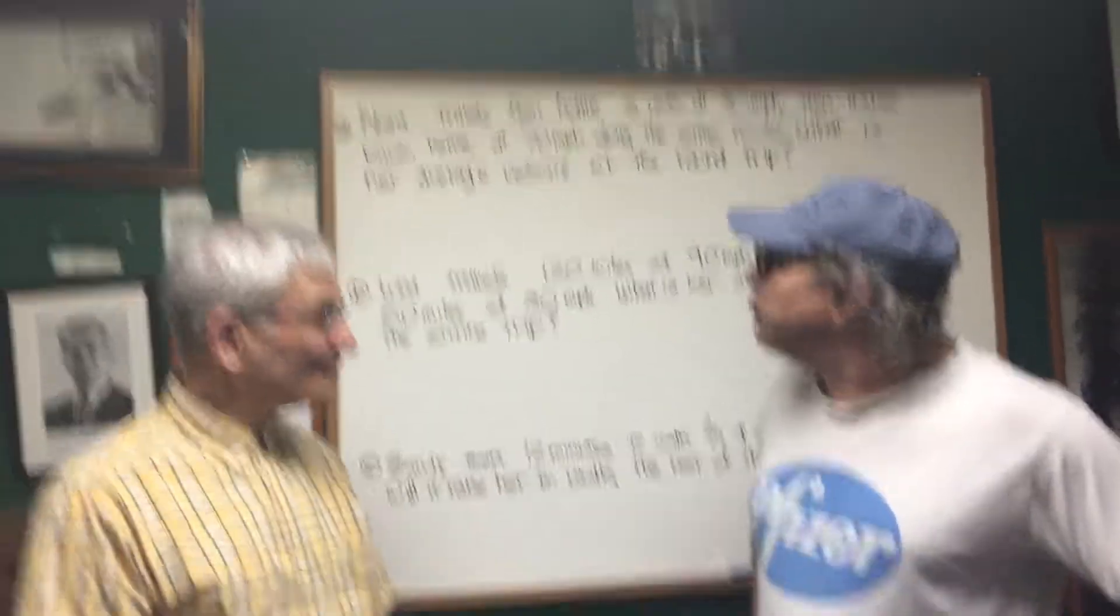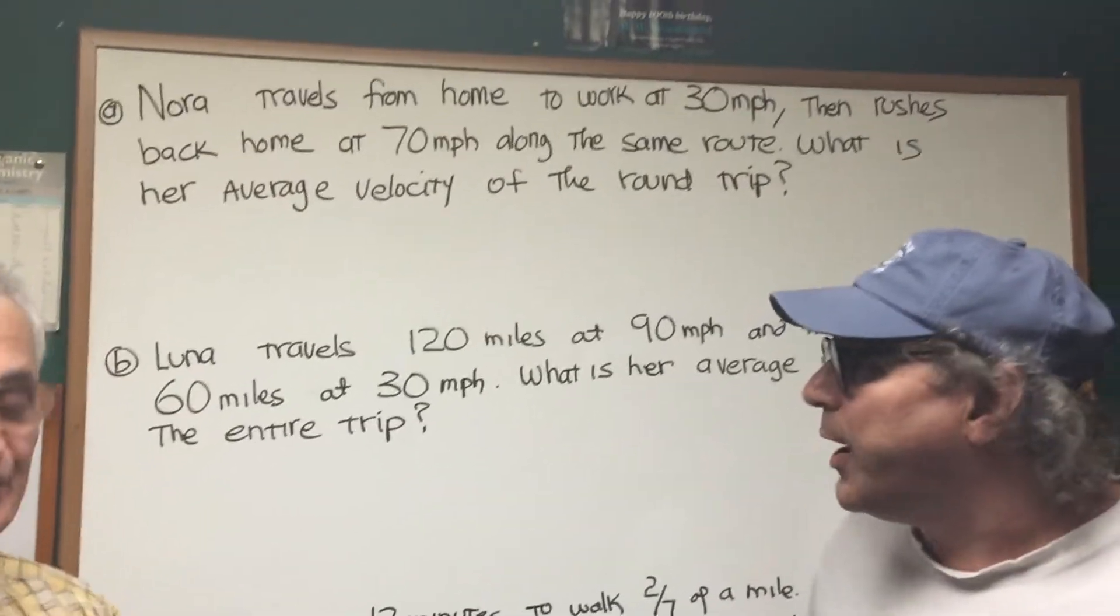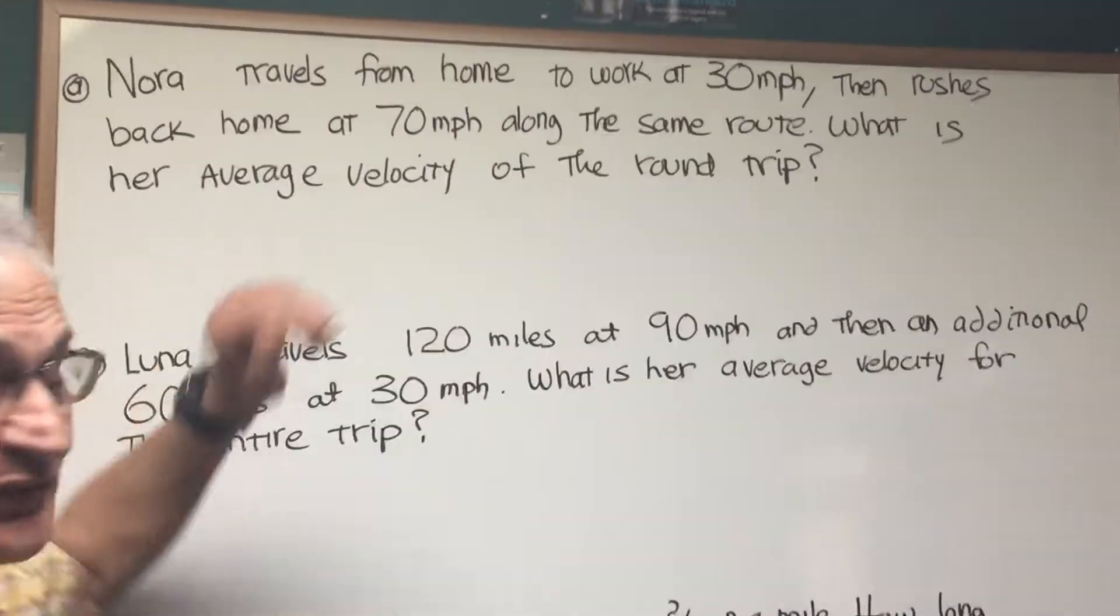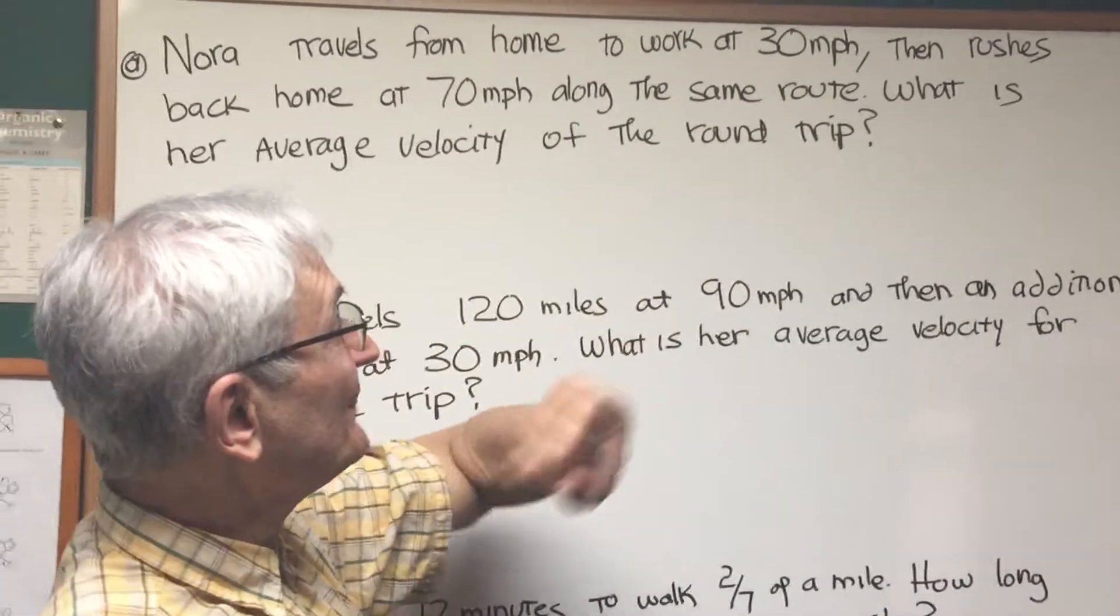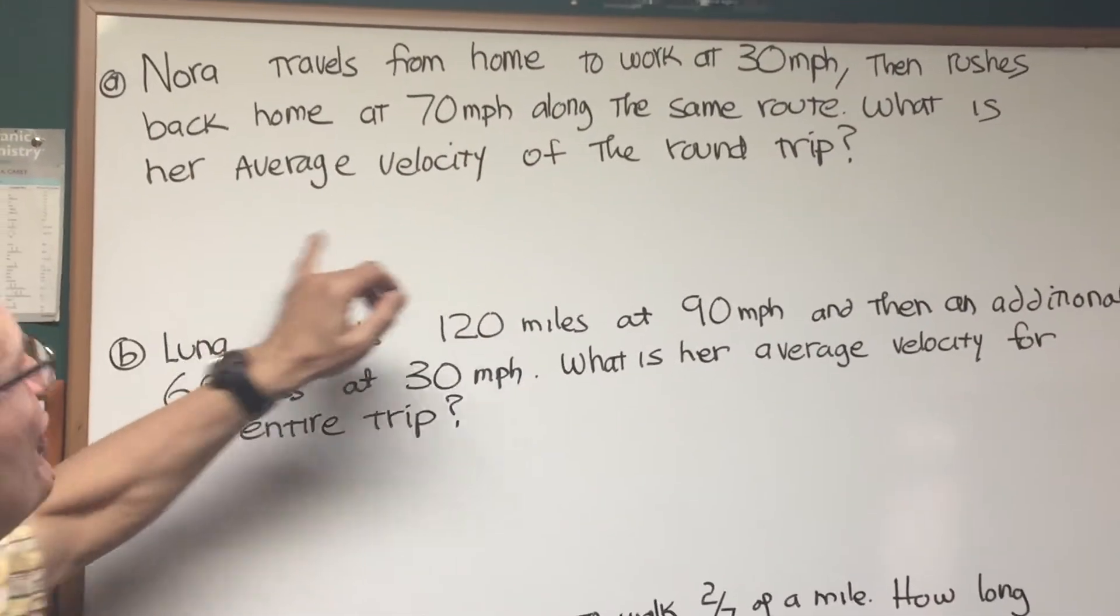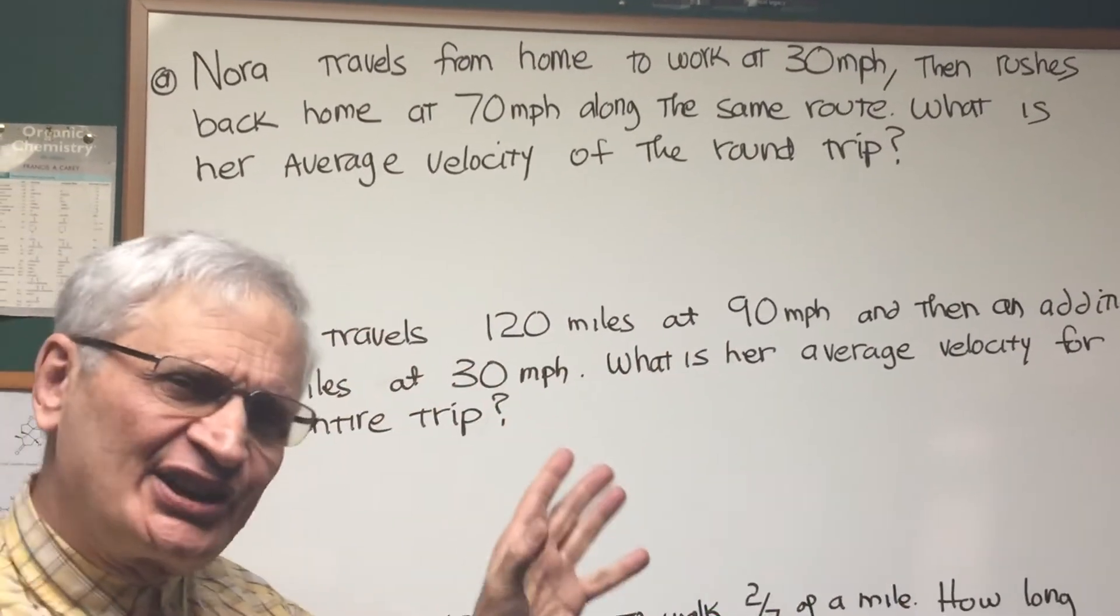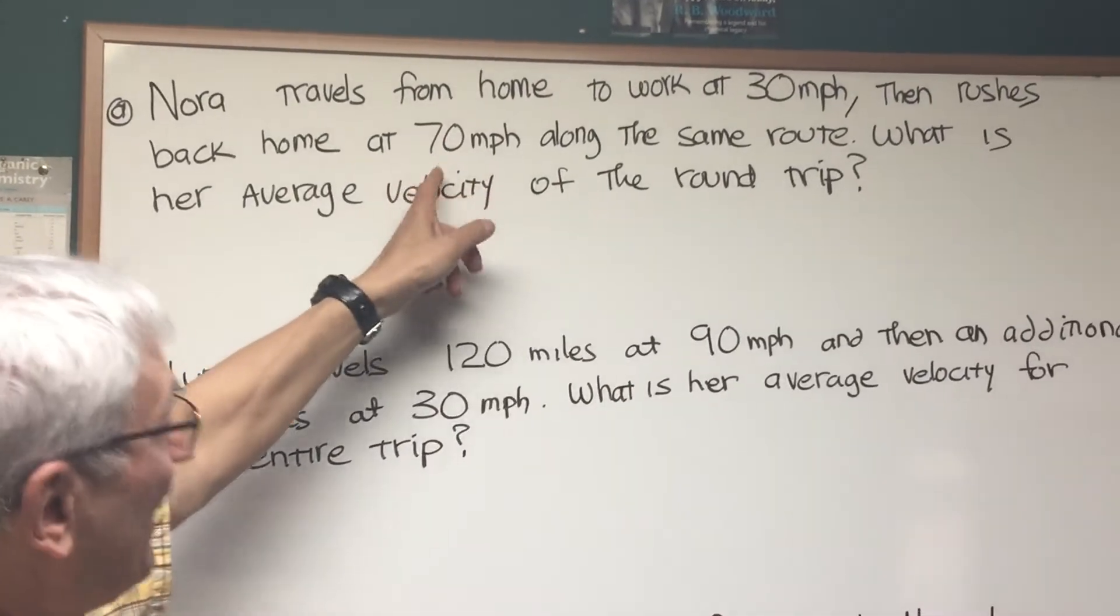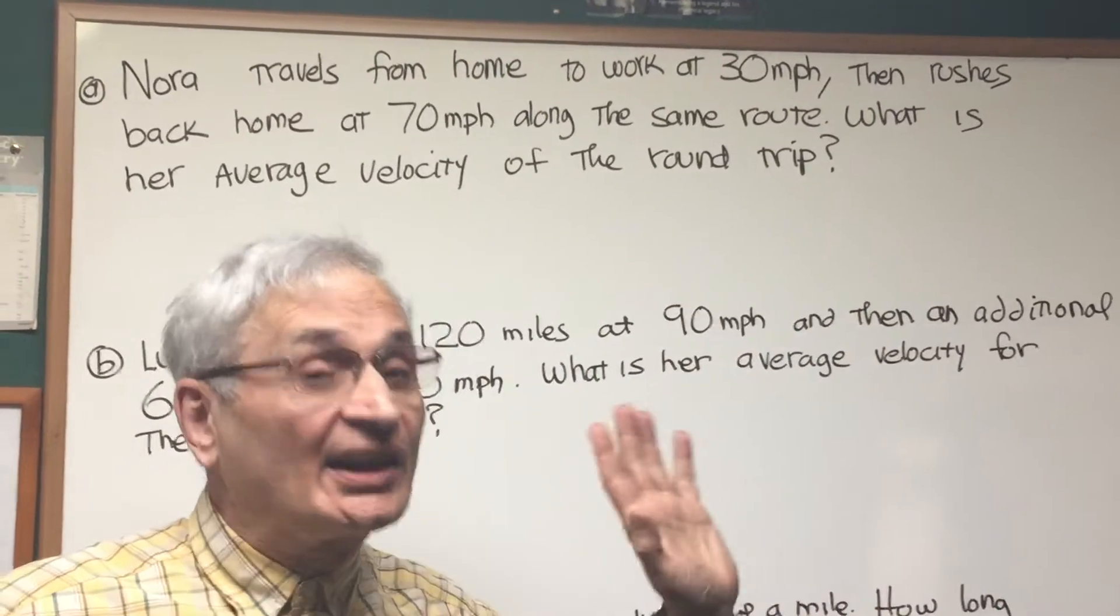So Professor, if you could show us a really good problem. Well actually I see you've got three problems on average velocity. Yes, that's what they are, average velocity problems. Professor Blois here, let's read the first problem. Nora travels from home to work at 30 miles an hour, then rushes back home at 70 miles an hour along the same route. What is her average velocity of the round trip? Now, if we approach this hastily, you may make the hasty assumption that the average velocity will add 70 to 30 to get 100 and divide by 2. 50 miles an hour, right? Not quite.